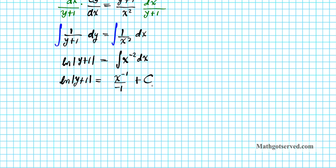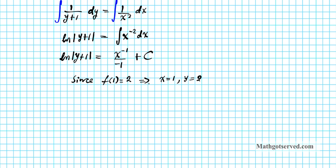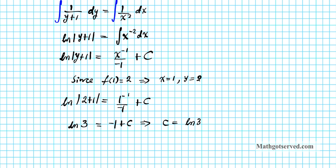Now I'm going to proceed to find C. To find what C is, I'll use the initial condition: since f of 1 equals 2, this implies that x is 1 and y is 2. I'm going to plug these two values into the equation. So I have the natural logarithm of the absolute value of 2 plus 1 equals 1 to the negative 1 over negative 1, plus C. That gives ln(3) equals negative 1 plus C, which implies that C equals the natural logarithm of 3 plus 1.